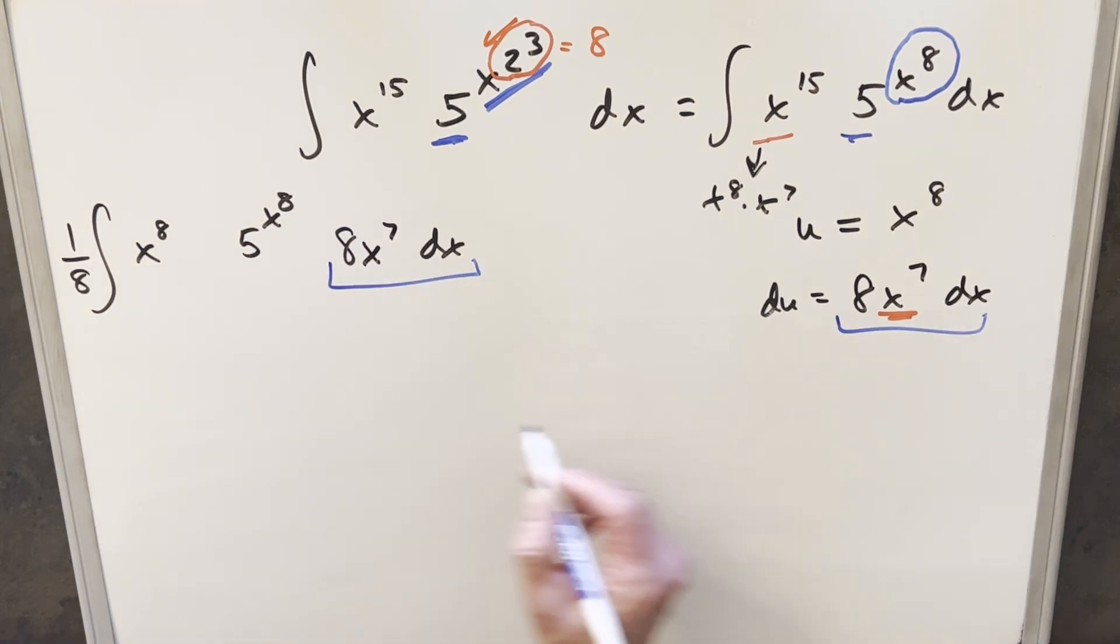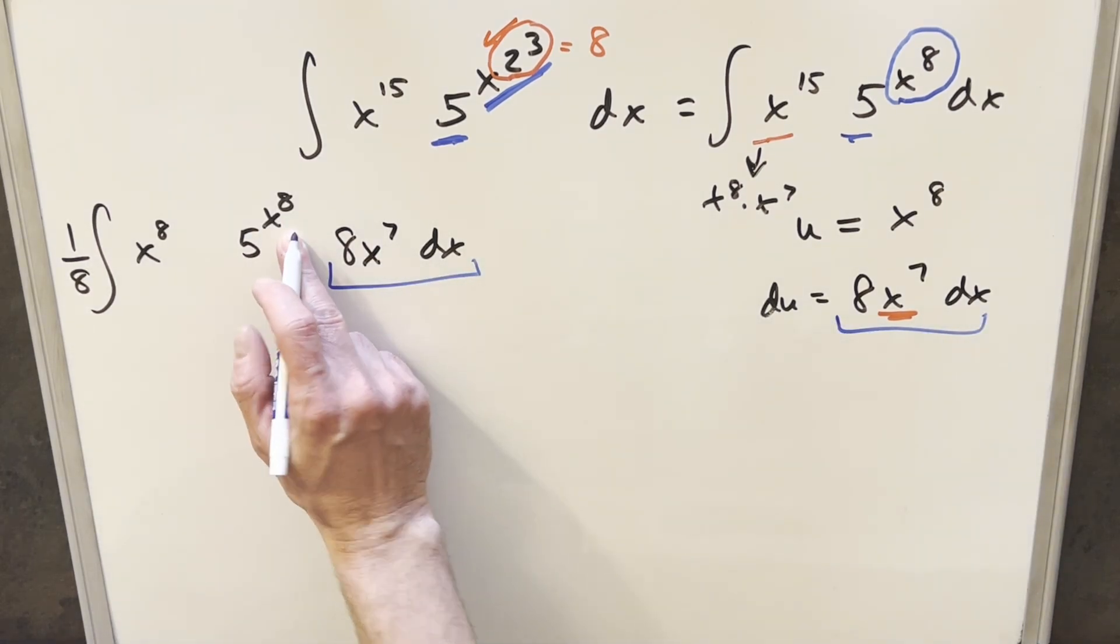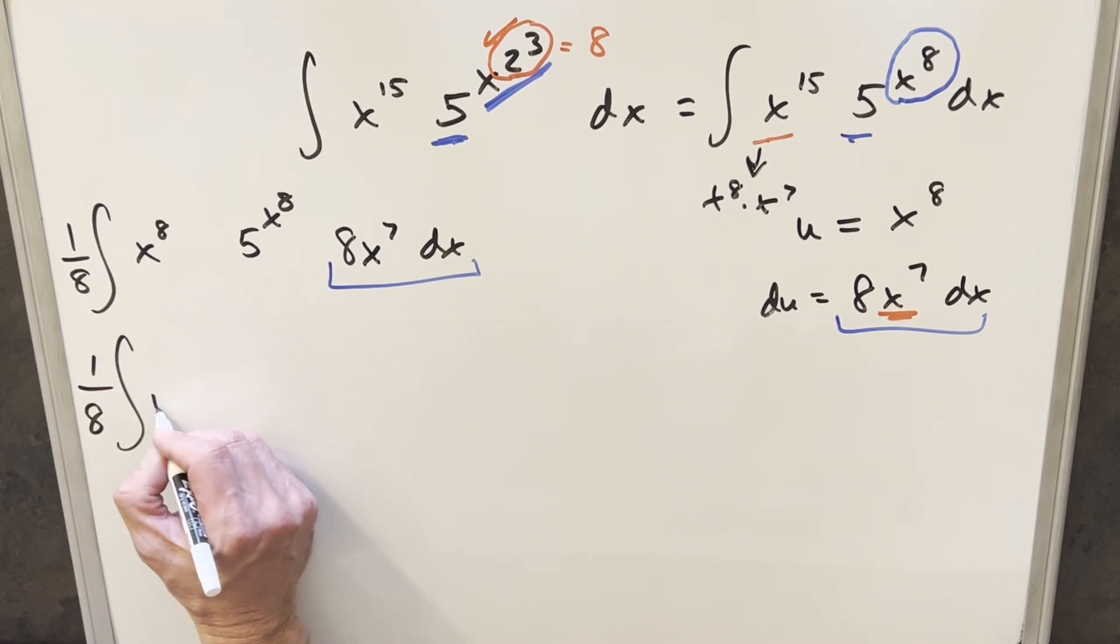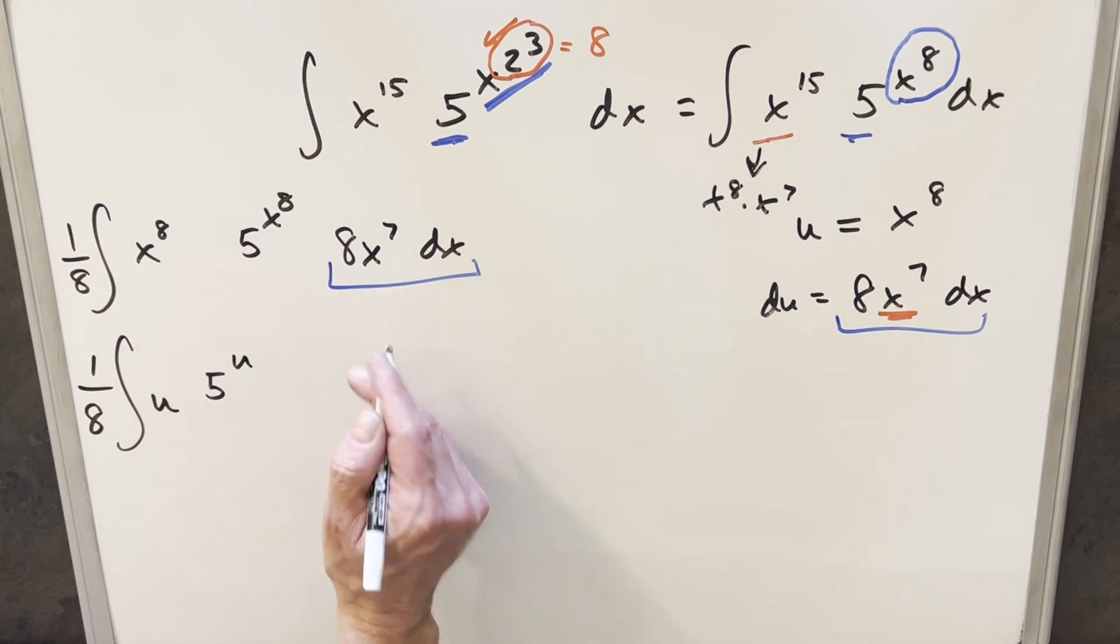And then we'll just copy this piece in for now. But now that we have it all lined up, this is just our du right here, and then we have x to the 8th, so this is going to just be u. So this is going to be an easy substitution. So this is all set up for our substitution. So then we'll have the 1/8th in front. This here just becomes u. This becomes 5 to the u, and this here is just du.